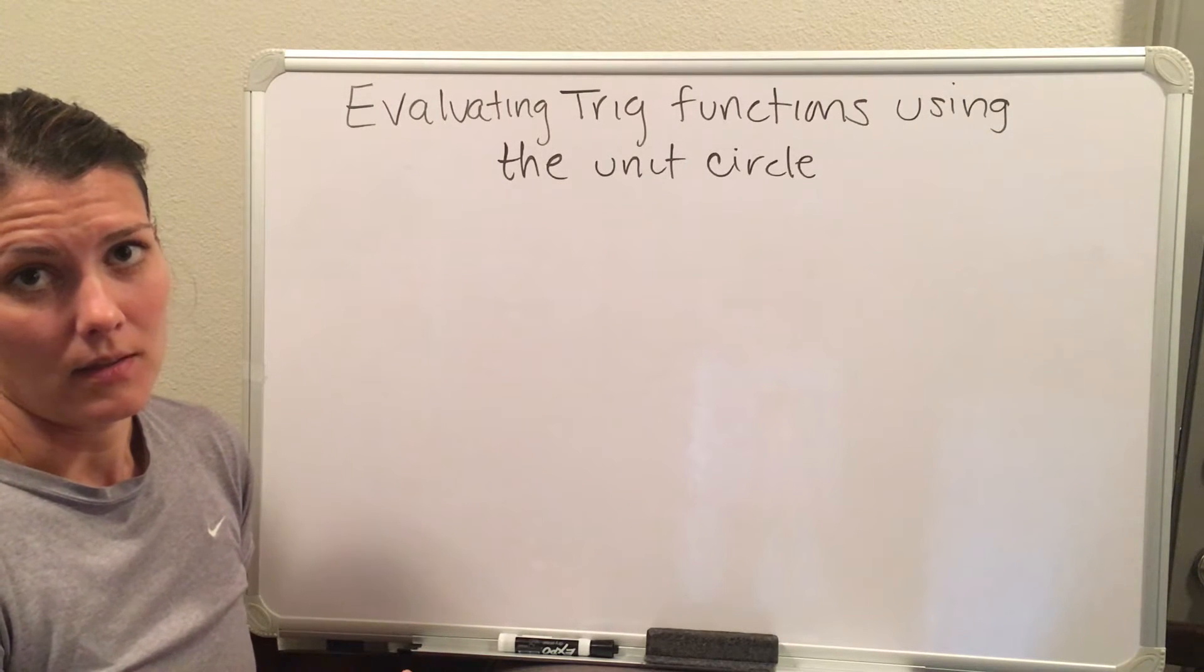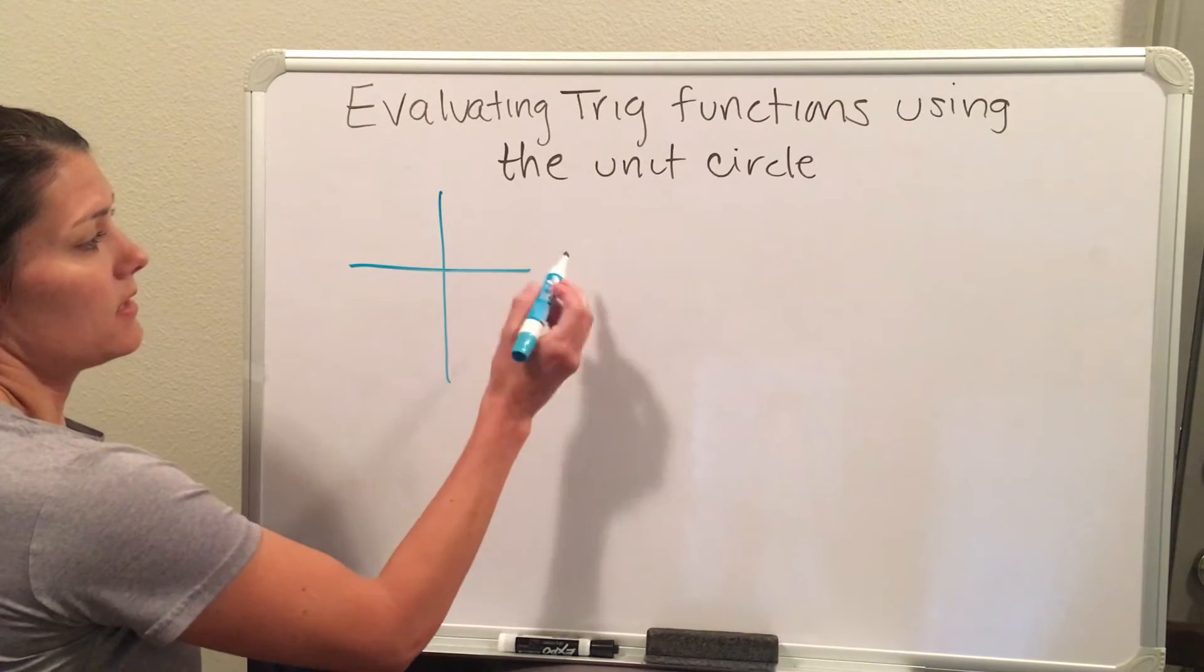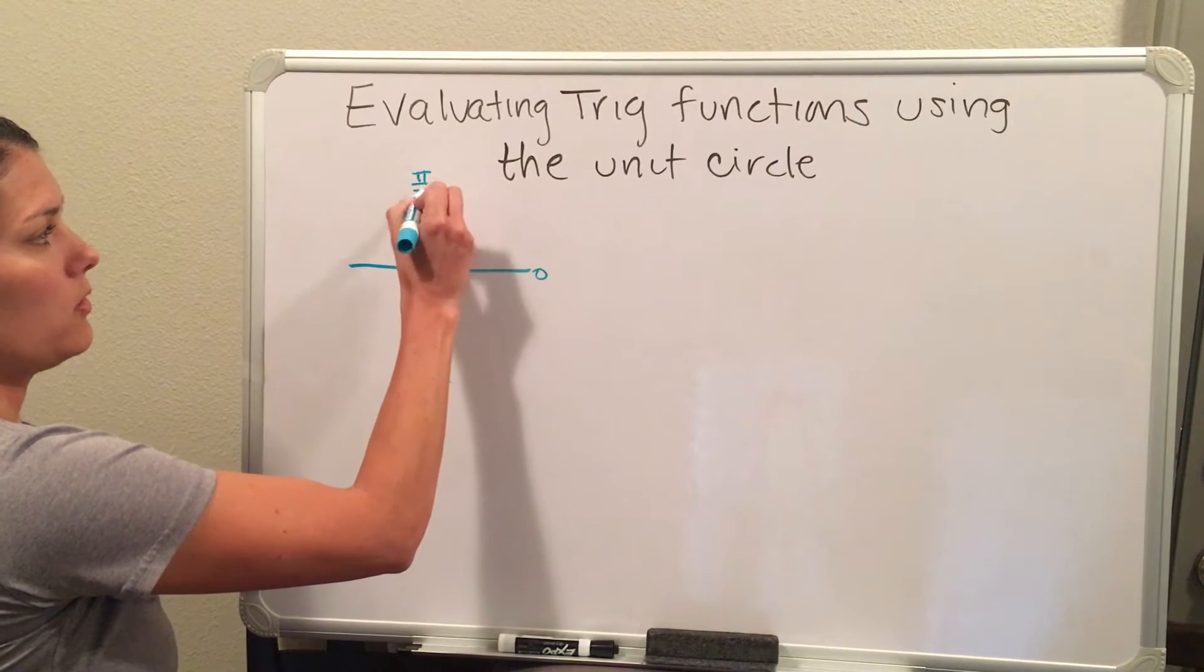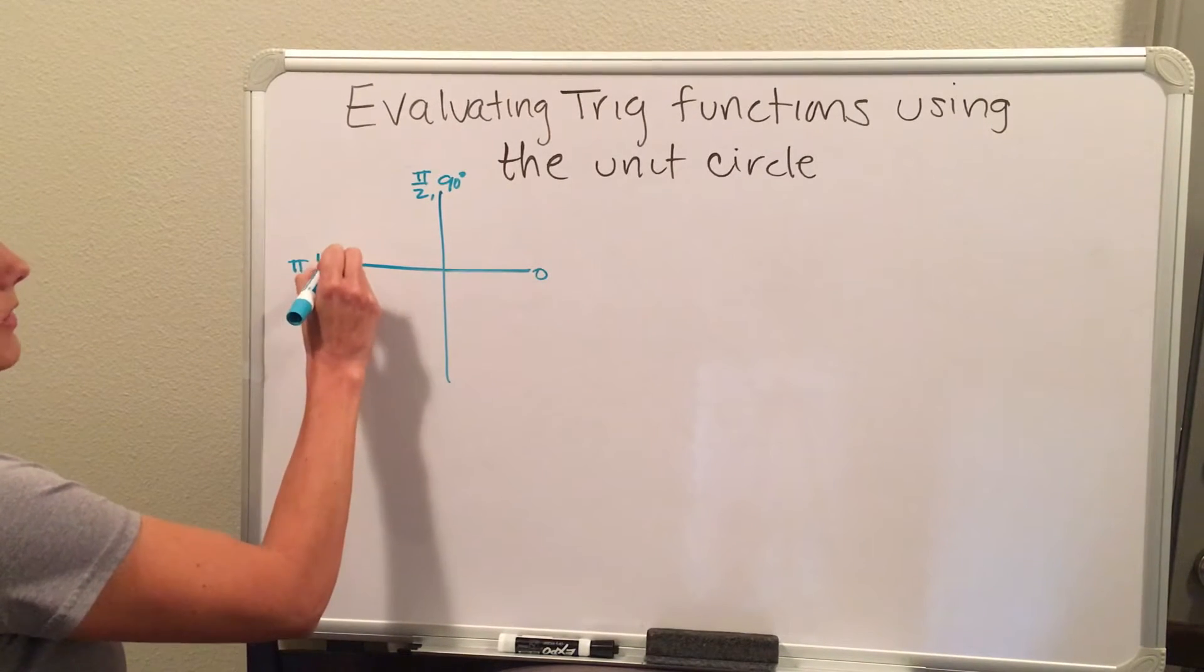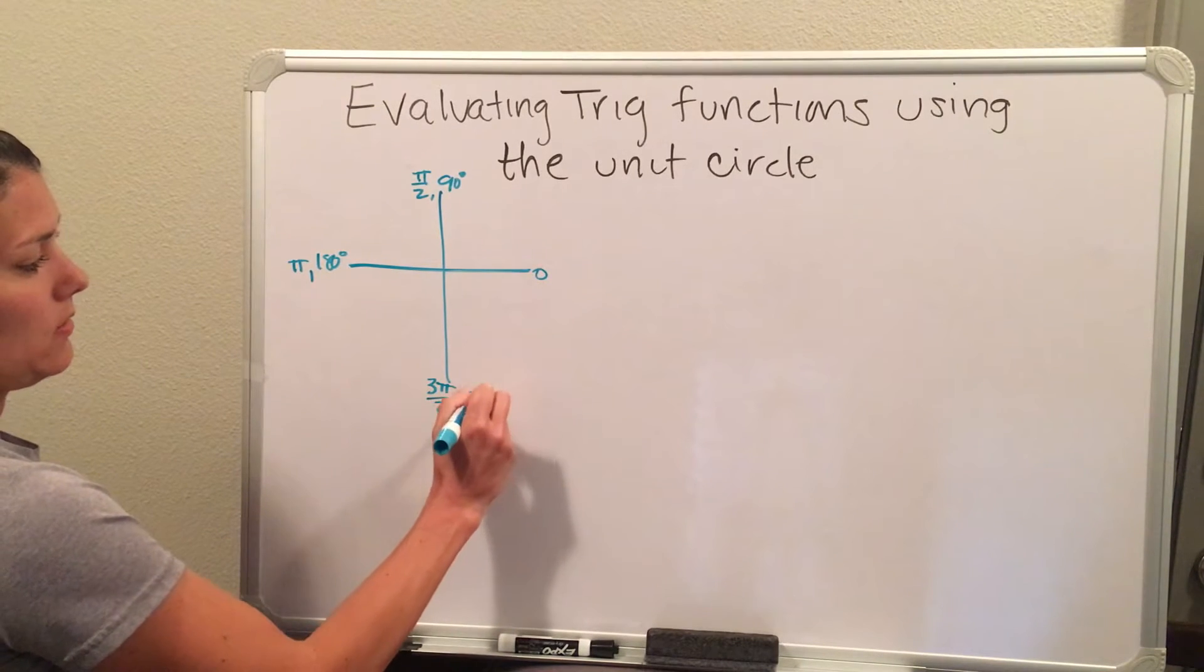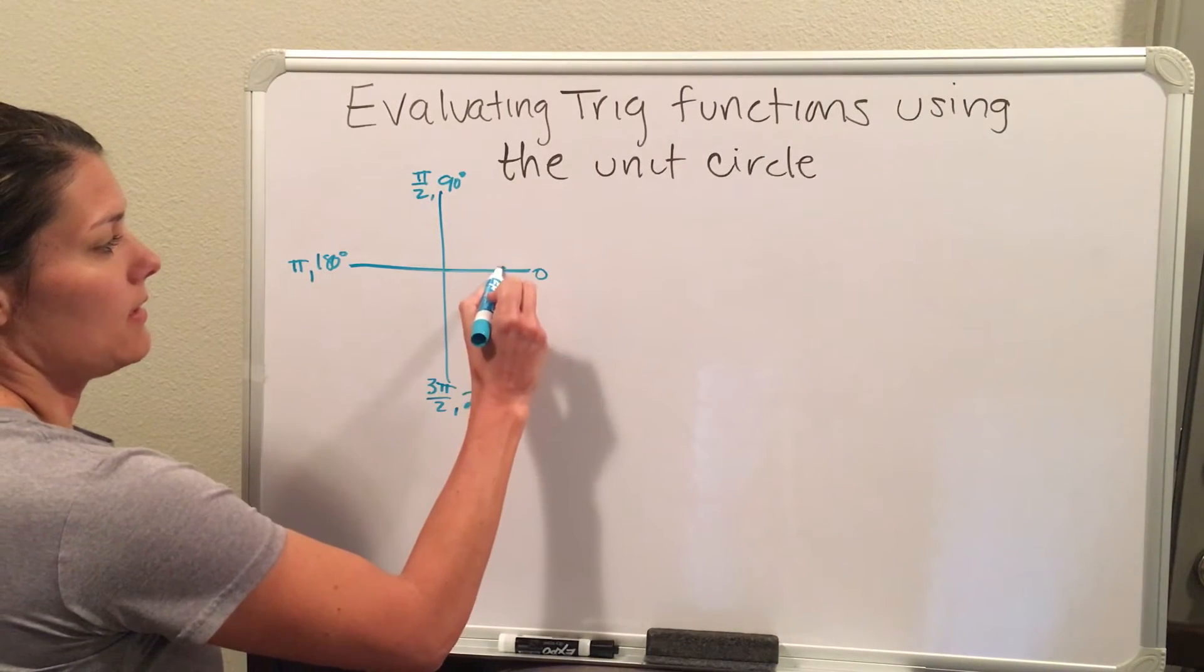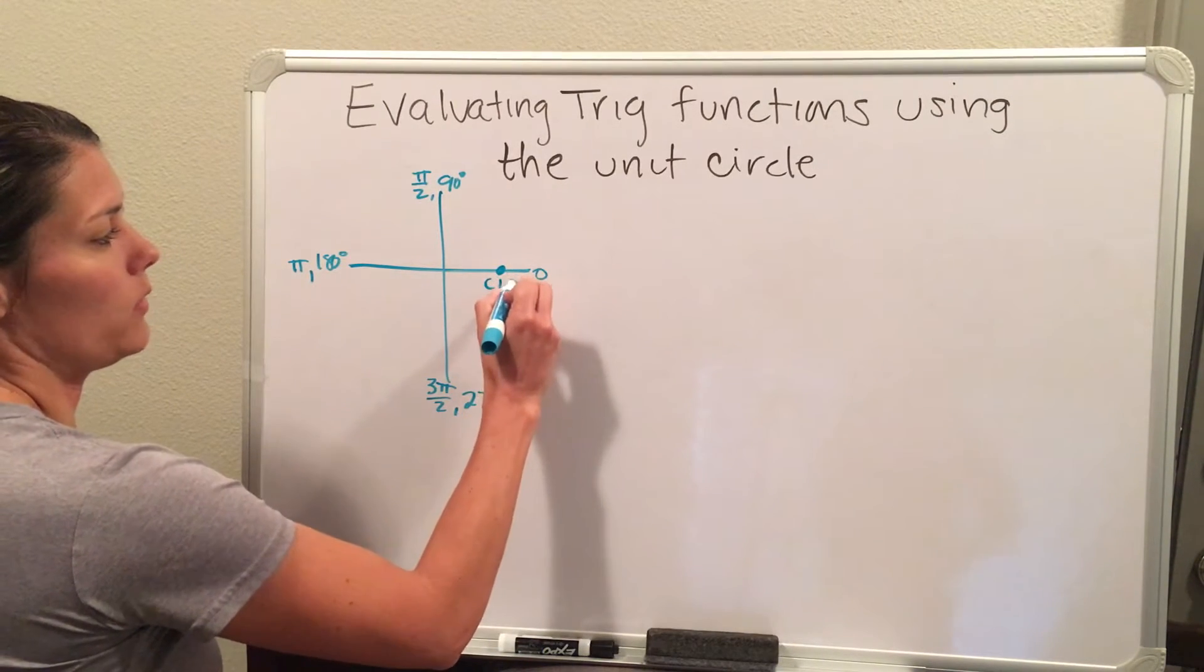First, we can start off with the x and y plane. At this axis right here, this is zero degrees or zero radians. Up here we are at π over 2 or 90 degrees. Here we are at π or 180 degrees, and here we are at 3π over 2 and 270 degrees. The unit circle is a circle with a radius of 1, so if I'm at zero degrees, I plot a point right here, and with the radius of 1, this is the point (1, 0).